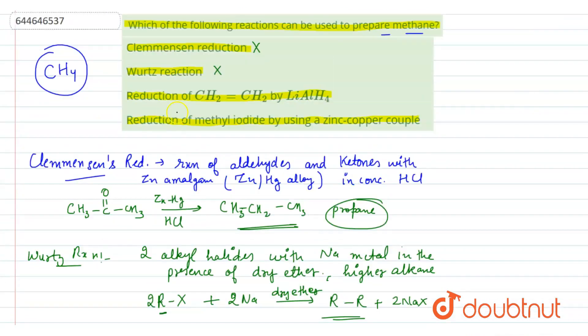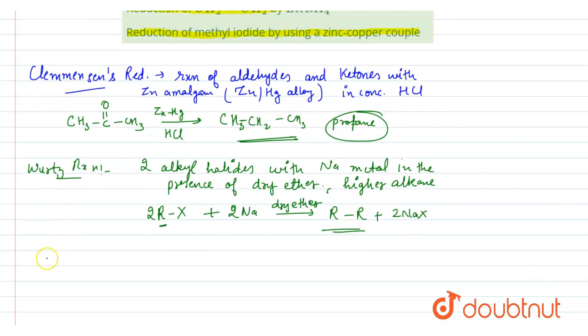The third reaction is reduction of CH2 double bond CH2 by LiAlH4, that is lithium aluminum hydride. If we draw this reaction, that is CH2 double bond CH2 which is ethene, and if reaction is done in LiAlH4.